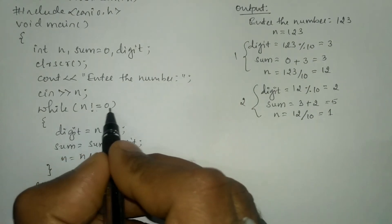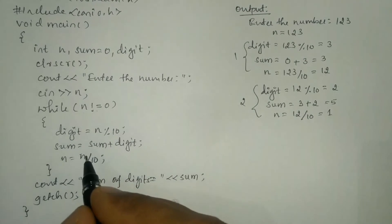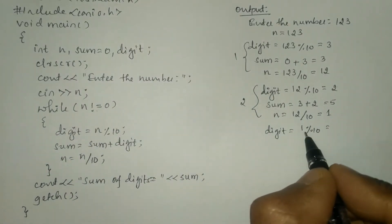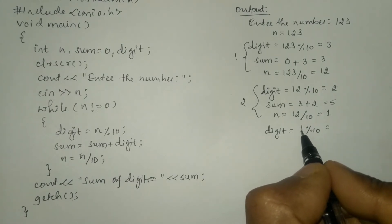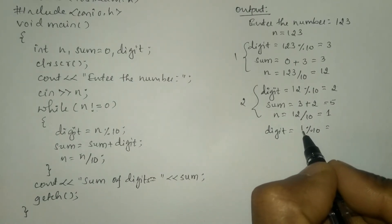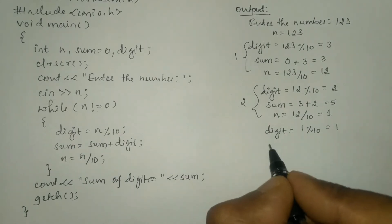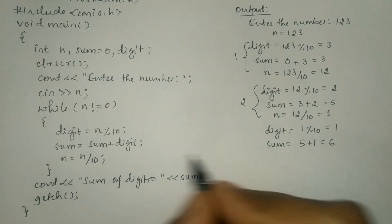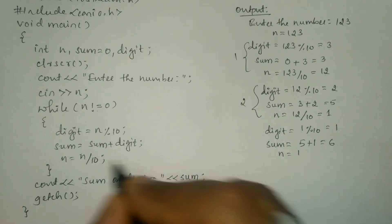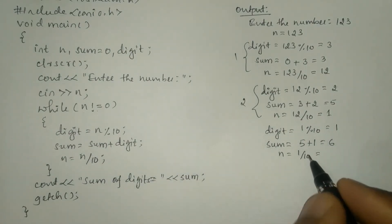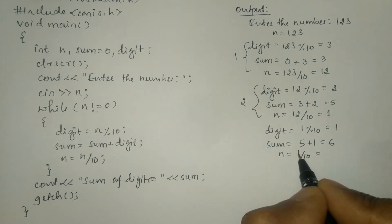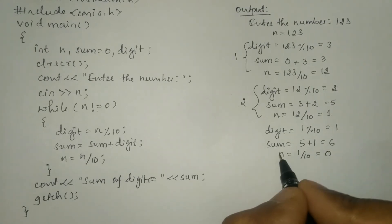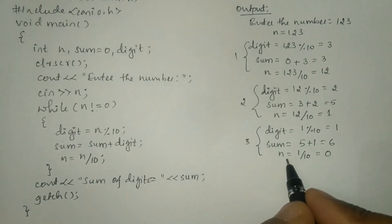Control transfers to while again to check whether n is not equal to 0. n is 1, which is not equal to 0, so it is true. Once again these three statements execute. digit = 1 % 10 — by the basic mathematical rule, when the numerator is less than the denominator, the numerator acts as the remainder and the quotient becomes 0, so 1 will be stored in digit. Next, sum = sum + digit — sum is 5 + 1. Then n = 1 / 10 — integer division returns the quotient 0, so 0 is stored in n. The third iteration is complete.